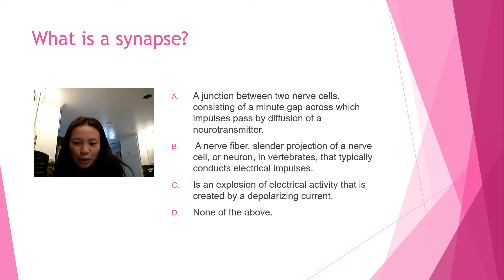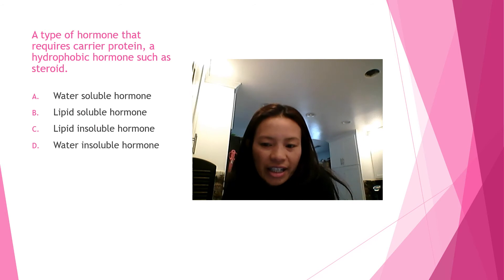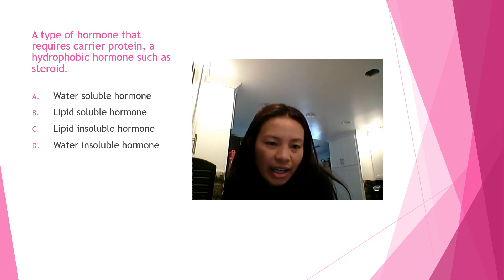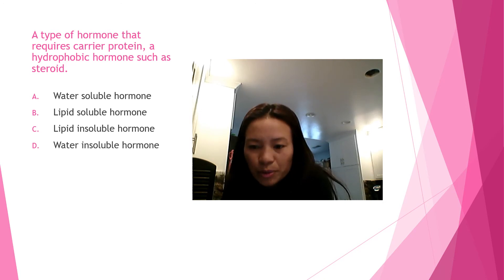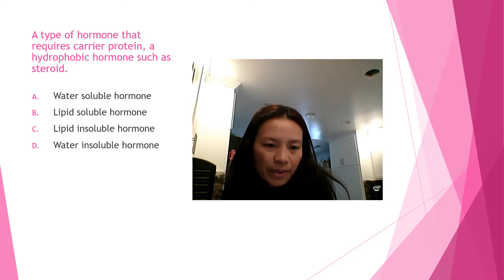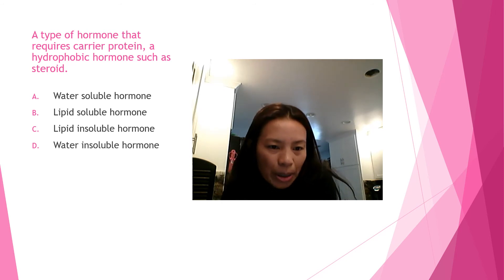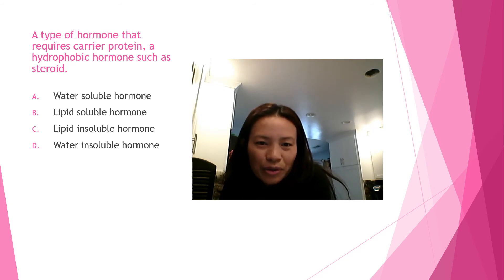Question seven: a type of hormone that requires a carrier protein — a hydrophobic hormone such as a steroid — is it A) water-soluble hormone, B) lipid-soluble hormone, C) lipid-insoluble hormone, or D) water-insoluble hormone? The answer is letter B — lipid-soluble hormone.